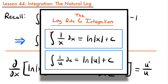The log rule for integration states that the integral of 1 divided by x, or x to the negative first power dx, is equal to the natural log of the absolute value of x plus c. Similarly, the integral of 1 divided by u du is equal to the natural log of the absolute value of u plus c. This rule is going to be very helpful for integrating rational functions.